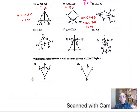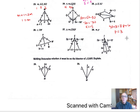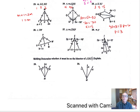Looking at number 25, we want to find P. These two sides are congruent, so 4P plus 3 equals 3P plus 6. Taking 3P away and 3 away from both sides gives P equals 3. IJ is then 4 times 3 plus 3, which is 12 plus 3, equaling 15. KJ is 3 times 3 plus 6, which is 9 plus 6, also equaling 15.